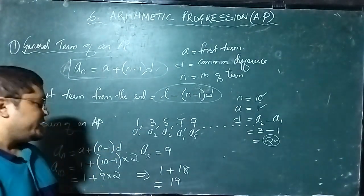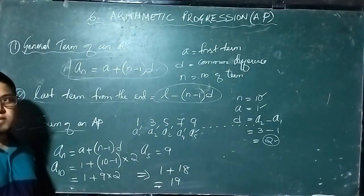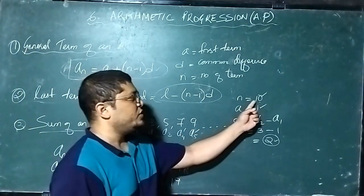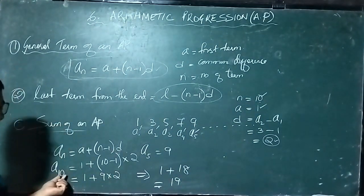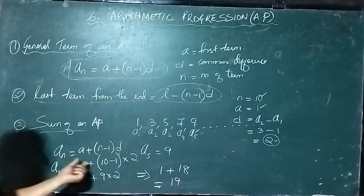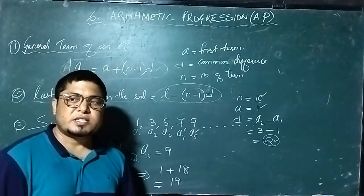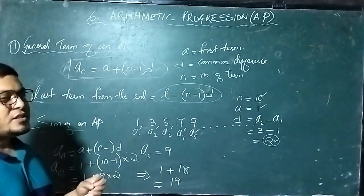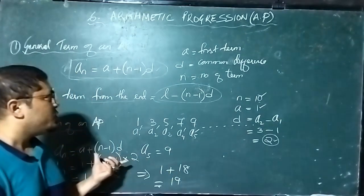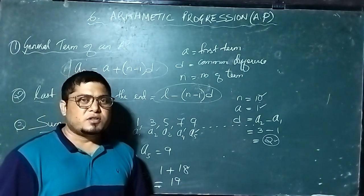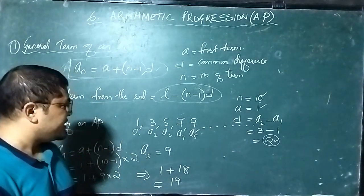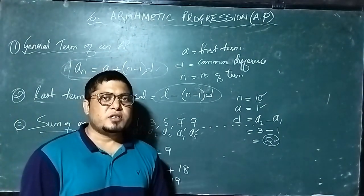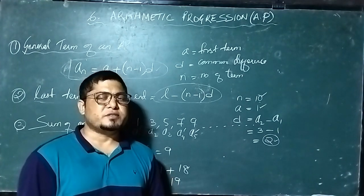In the same way we can find the 50th term — just put N = 50 in the formula and you will find it. This is the way we find the nth term, and using this formula we can also find the number of terms. We will solve more questions in the next video. Thank you.